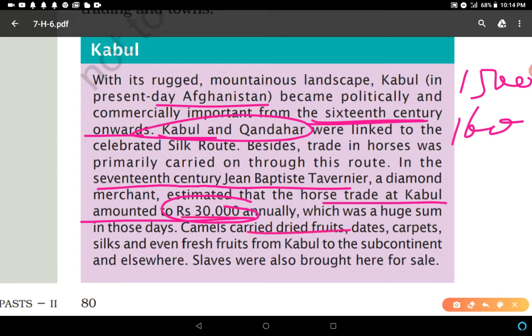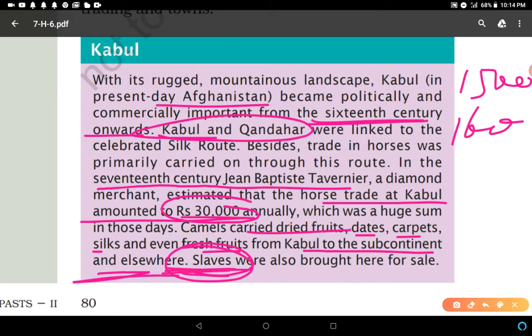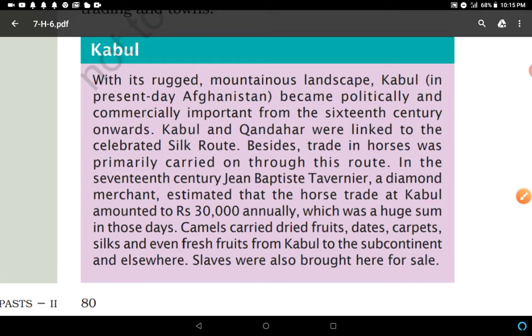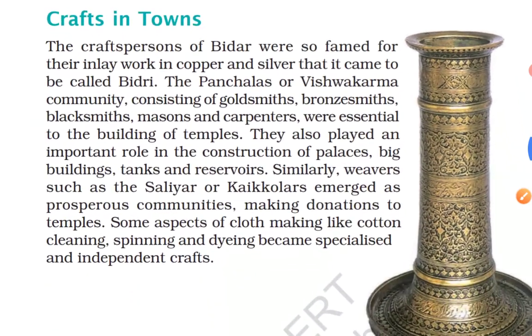Camels carried dried fruits, dates, carpets, silks, and even fresh fruits from Kabul to the subcontinent and elsewhere. Slaves were also brought here for sale. Slaves were people who were arrested, bound, and purchased by others — they were fully liable to their masters, considered as property rather than as human beings.